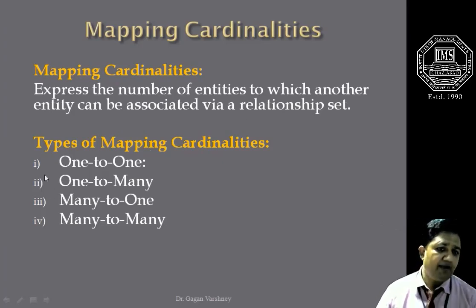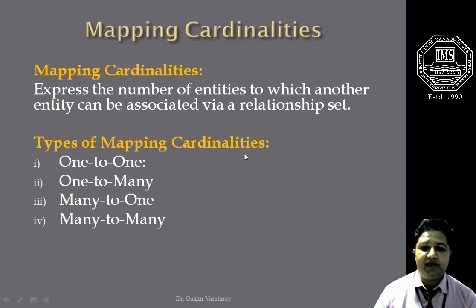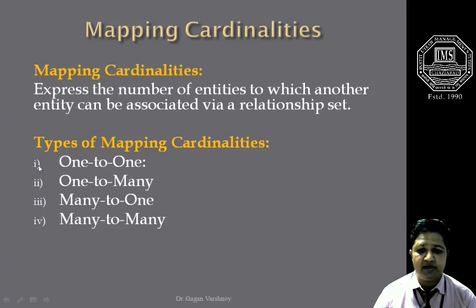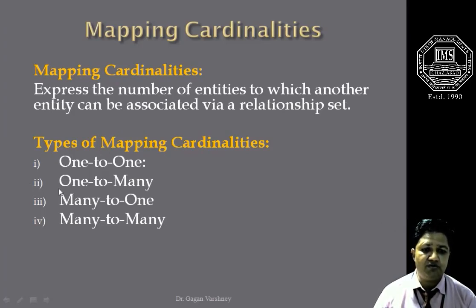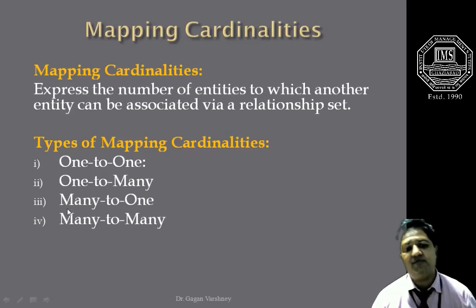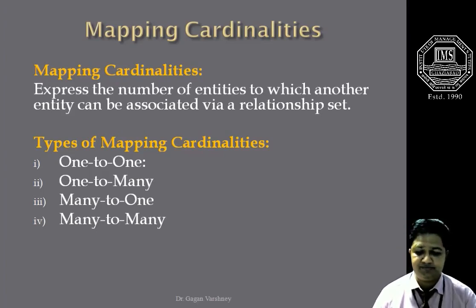There are four major types of mapping cardinalities. Number one is called one-to-one. Number two is called one-to-many. Number three is called many-to-many. And number four is called many-to-one.